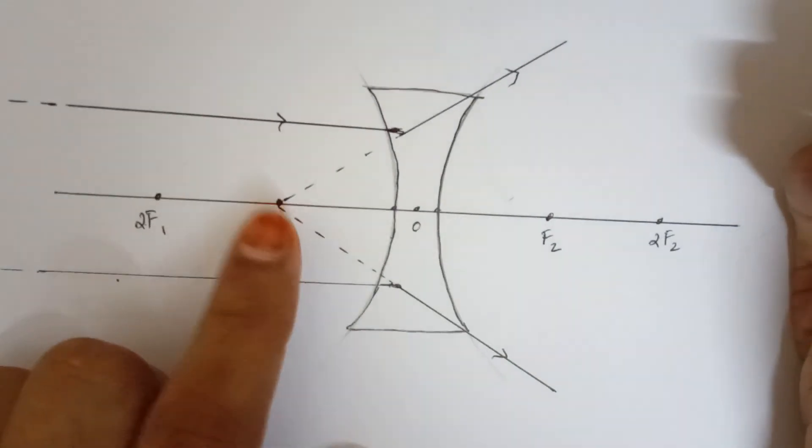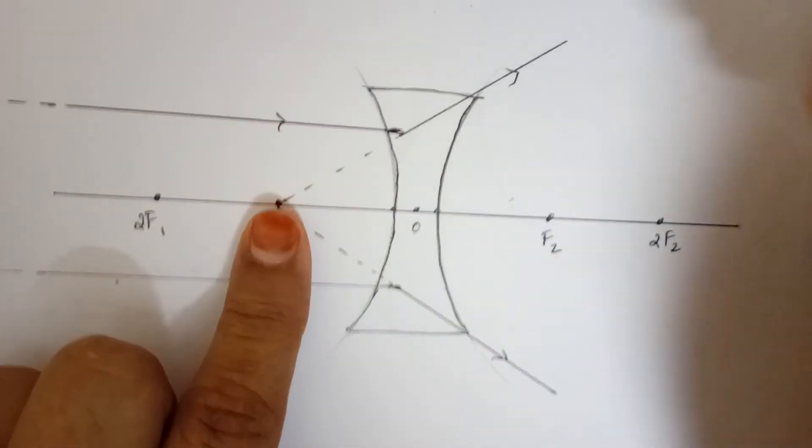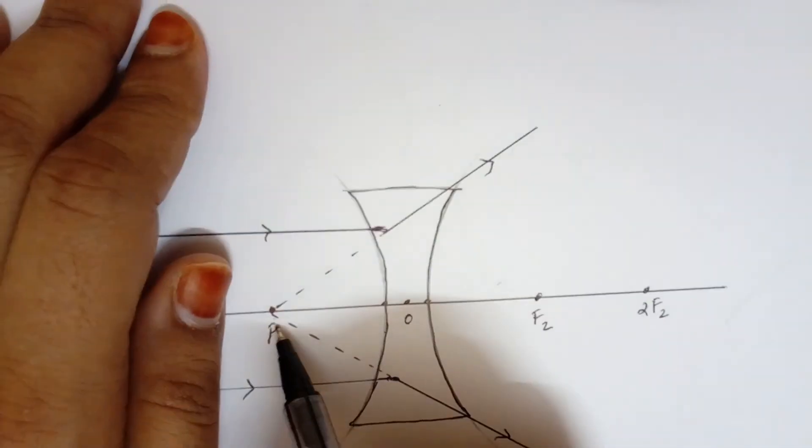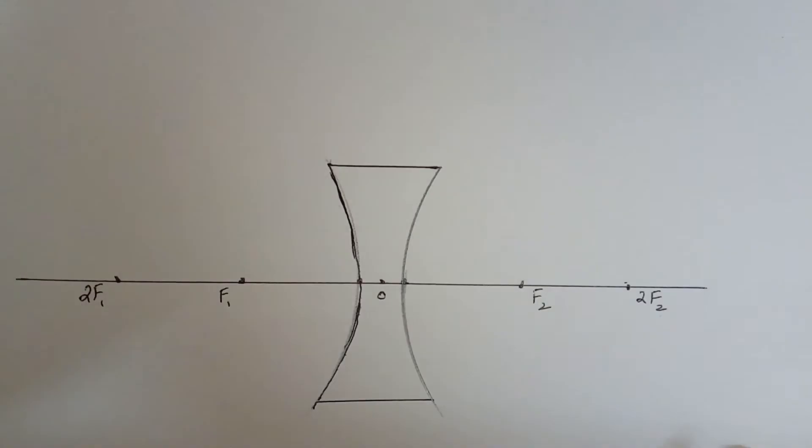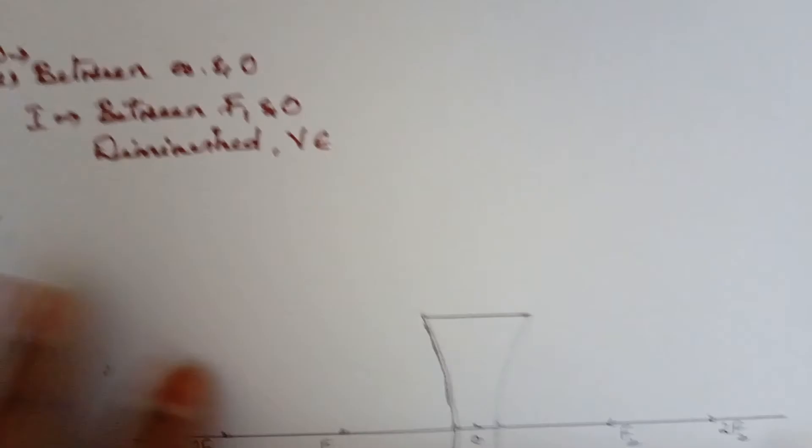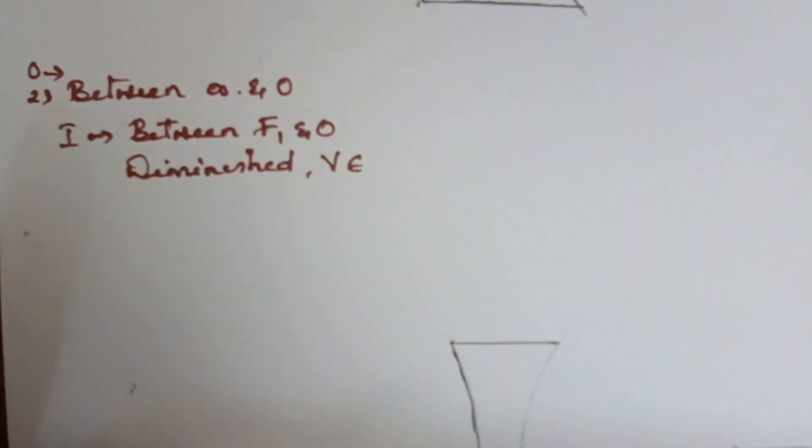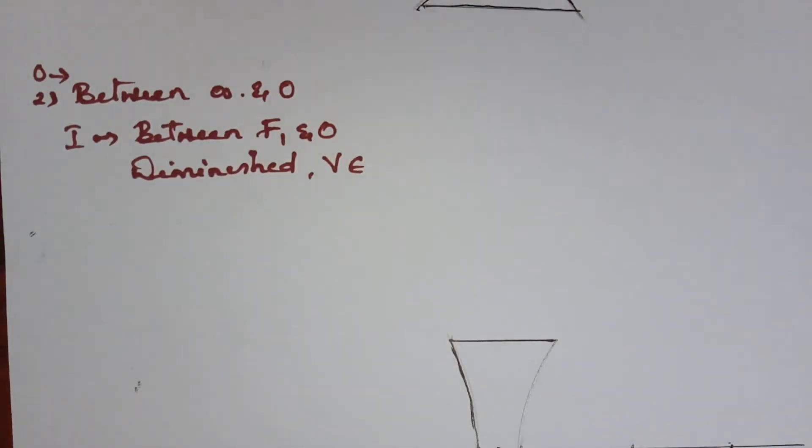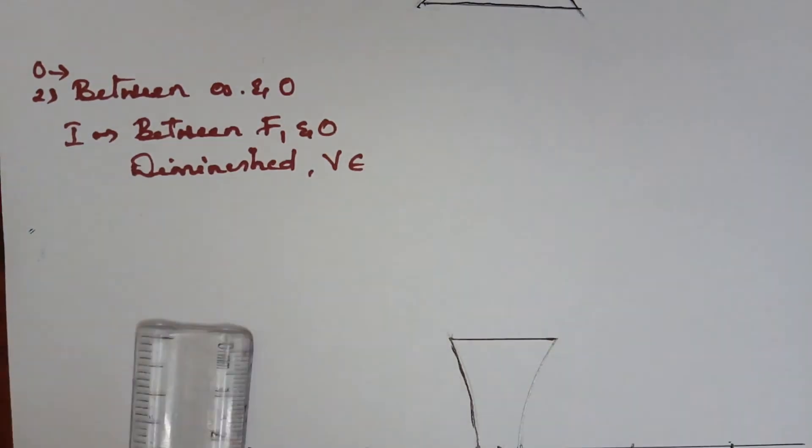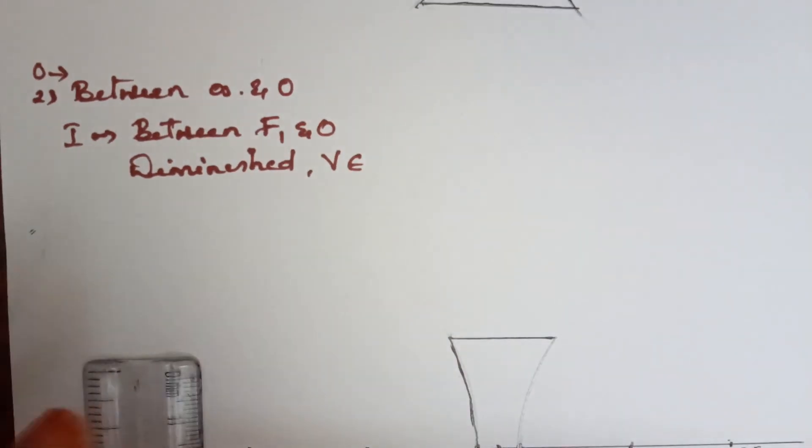Hence our image is going to be formed at F1. It's going to be point size and virtual and erect, so highly diminished. Okay, so for my second illustration, my object is between infinity and O.